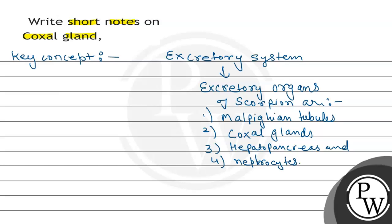So the question is about coxial gland. There is one pair of coxial glands, which are situated near the base of the third pair of walking legs in the fifth segment of the prosoma.